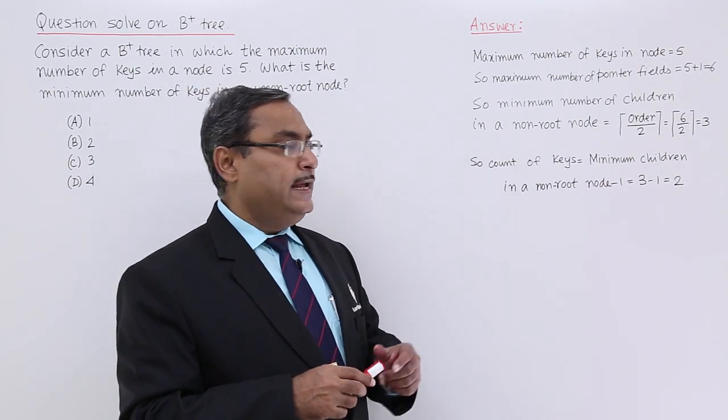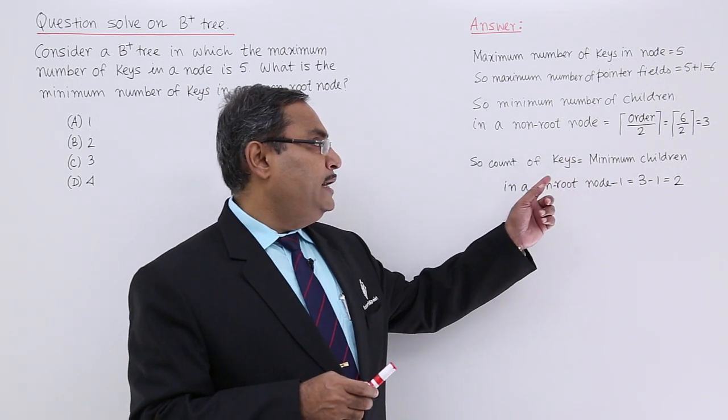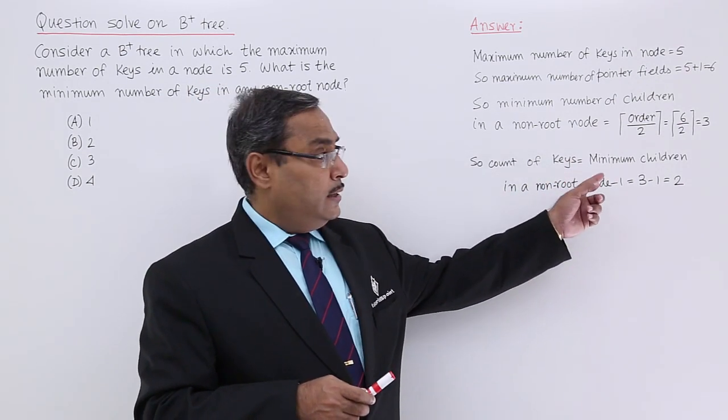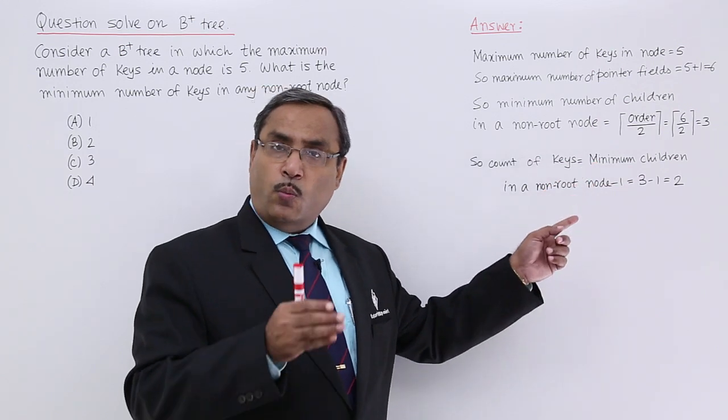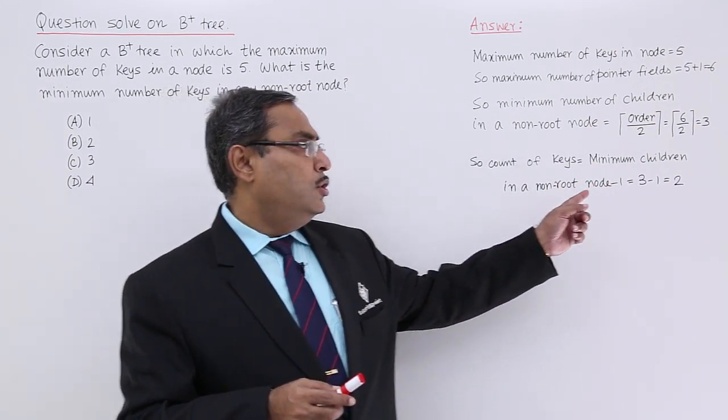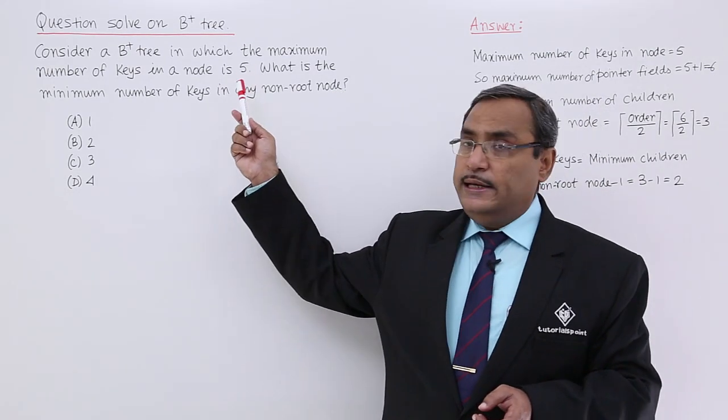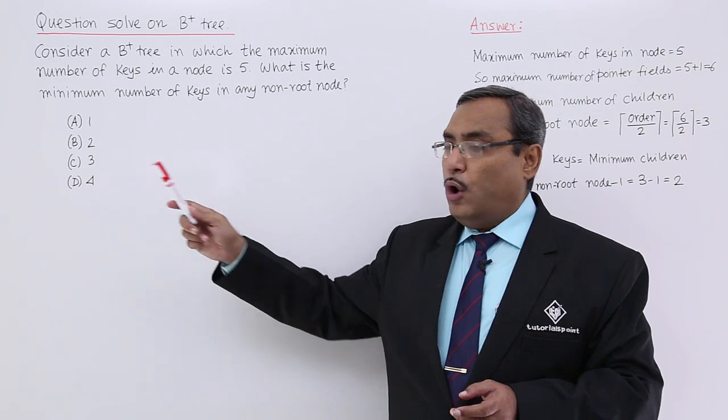So, the count of keys which is required as our answer - the minimum children in a non-root node will be 3, so 1 less than that will be the number of keys in the non-root node. So, 3 minus 1 is equal to 2. In the gate exam this question came with these 4 options.